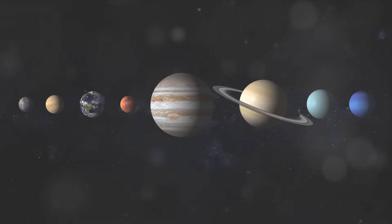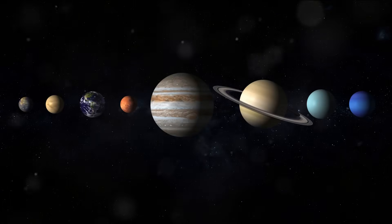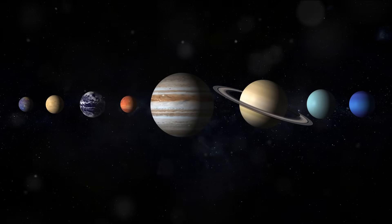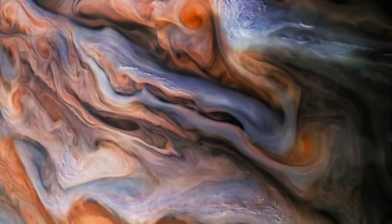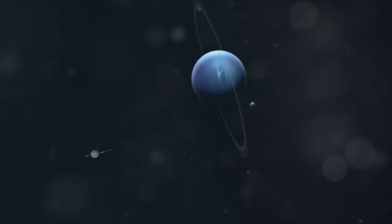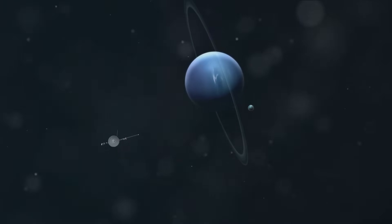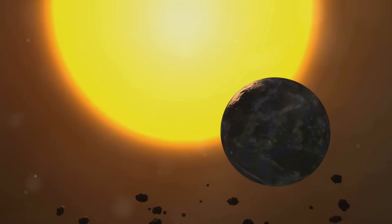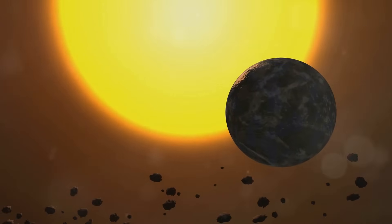Our journey through the solar system has been nothing short of extraordinary. We've ventured from the swift Mercury to the fiery Venus, from our home, the blue planet, to the dusty plains of Mars. We've marveled at the stormy Jupiter, admired the rings of Saturn, and gazed upon the icy giants, Uranus and Neptune. Each planet, a world of its own, with unique characteristics and moons that add to their charm.